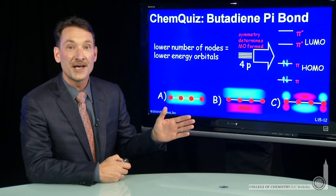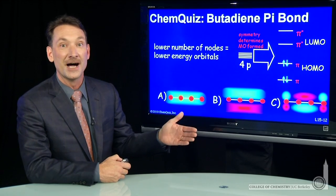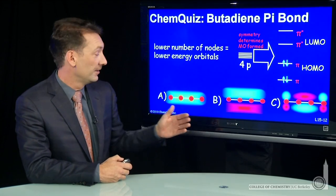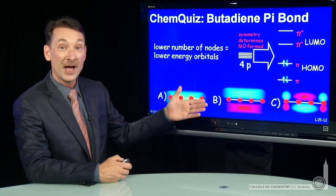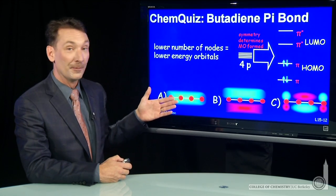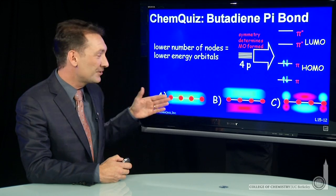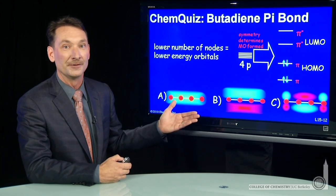We're looking for the lowest energy pi molecular orbital in butadiene, and we have three choices. This first choice actually isn't a pi orbital. It's a low energy orbital, if this were to form, because it's along the internuclear axis, we would call it a sigma orbital.